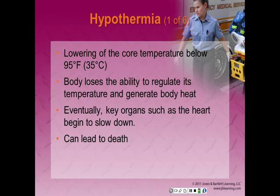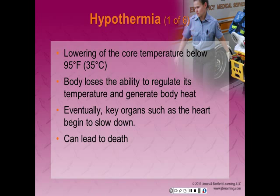Hypothermia occurs generally when the core body temperature falls below 95 degrees Fahrenheit — this is the temperature of the heart, lungs, and vital organs. The body loses the ability to regulate its temperature and generate body heat. Physiologically, to protect against heat loss, the body constricts blood vessels in the skin, resulting in bluish lips or fingertips. Secondarily, the body shivers to generate heat. As these mechanisms are overwhelmed, body functions begin to slow down, eventually key organs such as the heart begin to slow, which can lead to death. Hypothermia can develop quickly, as with cold water immersion, or gradually, as with cold environment exposure over several hours.